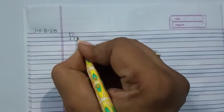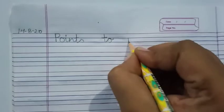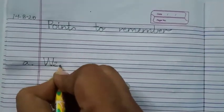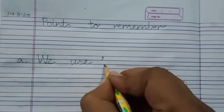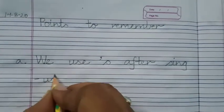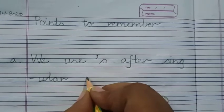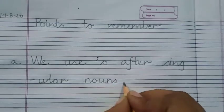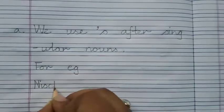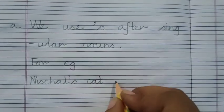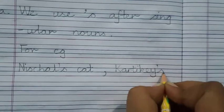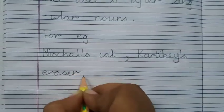Then I explained points to remember — on a new page we will write points to remember. Leave a line. Write down: a. We use apostrophe s after singular nouns. For example: Nishchal's cat, Kartik's eraser, etc.